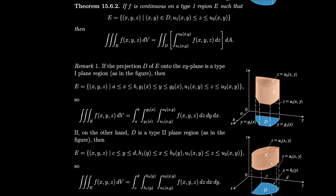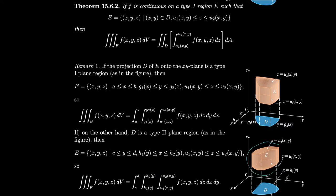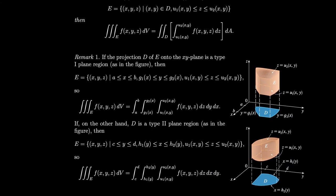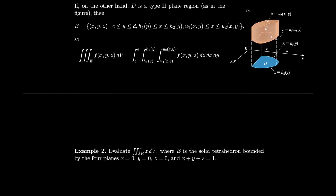The other possibility for a type 1 solid region is that it projects downward into the xy-plane as a type II plane region. In that case we still integrate first with respect to z (because it was type 1 in 3D), but then we go between two x = functions of y, and integrate with respect to y last. This all assumes we're projecting into the xy-plane. Let's do an example.